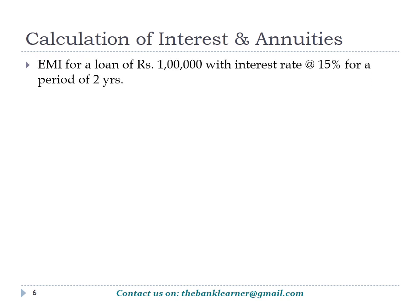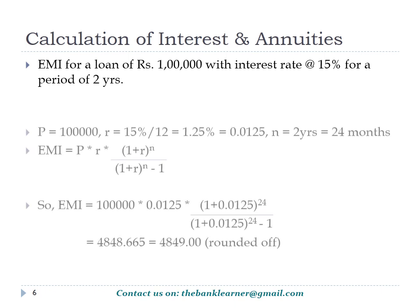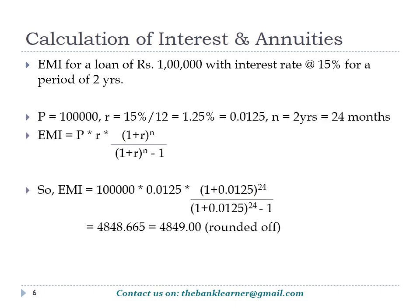As an example, let us calculate EMI for a loan of Rs. 1,00,000 with 15% interest rate for 2 years. P = 1 lakh, R = 15%/12 = 0.0125 (converting rate per annum to rate per installment), and n = 24 months. Applying the formula: EMI = 1,00,000 × 0.0125 × (1.0125)^24 / ((1.0125)^24 − 1), which gives Rs. 4,849 per month.